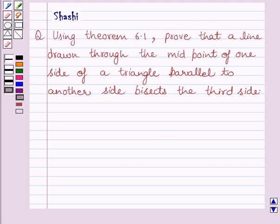Hi and welcome to the session. Let us discuss the following question. Question says, using theorem 6.1, prove that a line drawn through the midpoint of one side of a triangle parallel to another side bisects the third side.